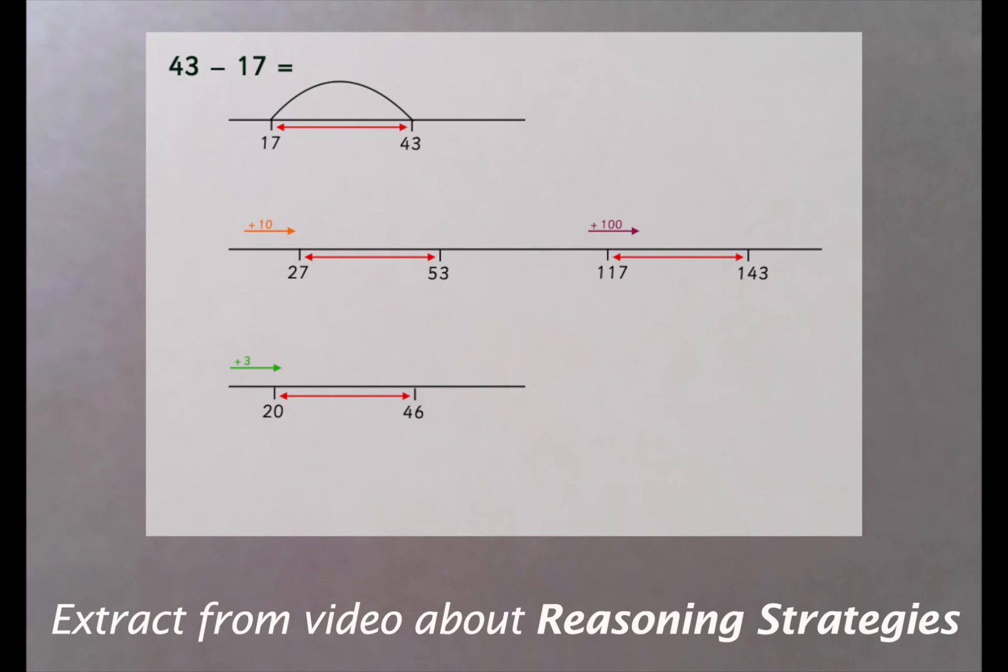46 minus 20 is an easy subtraction because we are subtracting a multiple of 10, and it's precisely to make this happen that we displaced the subtraction by moving it up three numbers along the number line.